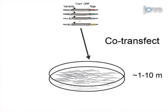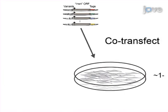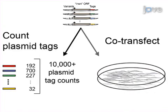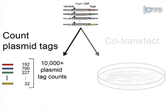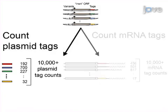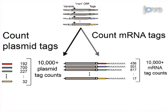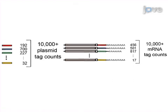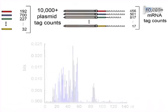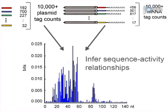The final step is to count the number of occurrences of each of the identifying sequence tags in the reporter mRNAs and the corresponding reporter library by deep sequencing. Ultimately, results can be used to infer the relationship between the DNA sequence and activities of gene regulatory elements through computational analysis of the sequence tag counts.